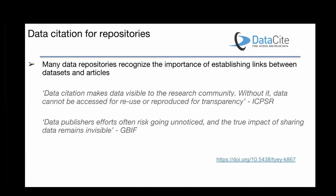I'd like to talk about the role of data repositories, because when we talk about data citation we often focus on references in articles to datasets. But information about an association between an article and a dataset can come from both sides — from the publisher, but also from a data repository. In an ideal world, authors should always cite underlying data in their article, but right now that's not yet the case. Not all datasets are cited in articles, and in some cases the article is available before the dataset, so the publisher can't know about it yet.